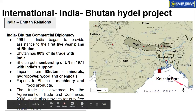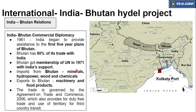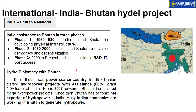India-Bhutan relations can be divided into three phases. Phase one (1960–1980): India heavily helped Bhutan develop physical infrastructure like roadways and power plants. Phase two (1980–2000): India helped Bhutan develop democracy and decentralization. Phase three (2000 onwards): India has been helping Bhutan in research and development, IT development, and port accessibility — including the third-country transit access provided under the 2006 agreement.